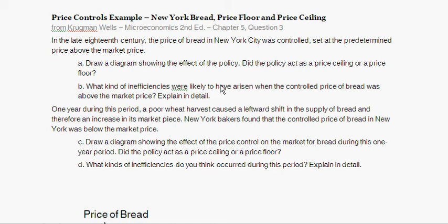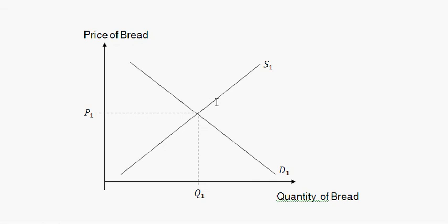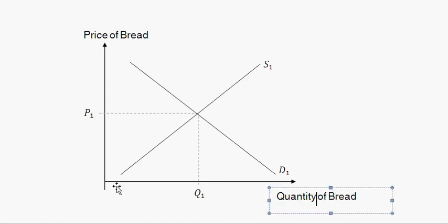Part A asks us to draw a diagram showing the effects of the policy and whether it acted as a price ceiling or price floor. Let's turn to the regular demand-supply graph. On the vertical axis you have price — in this case the price of bread — going from low to high. On the horizontal axis you have quantity of bread. You have a typical downward-sloping demand curve.